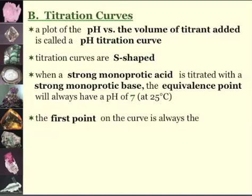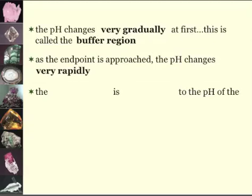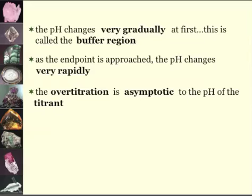The first point on the curve is always the pH of the sample. pH changes very gradually at first, and this is called the buffer region. As the endpoint approaches, the pH changes very rapidly, and the over-titration is asymptotic to the pH of the titrant, which means it never quite reaches it.